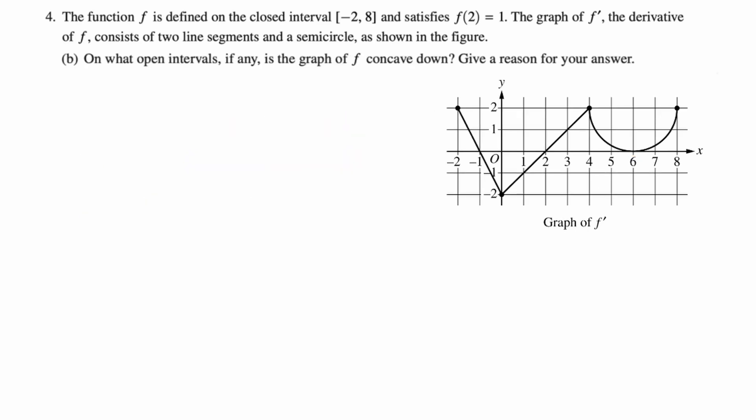Let's take a look at the next part. On what open intervals, if any, is the graph of f concave down? Give a reason for your answer. So we're given the graph of f prime. We want to base our answer on f prime. You look at f prime, and anywhere f prime is decreasing, we know that f is going to be concave down because if f prime decreases, f double prime is negative, f double prime being negative means f is concave down.